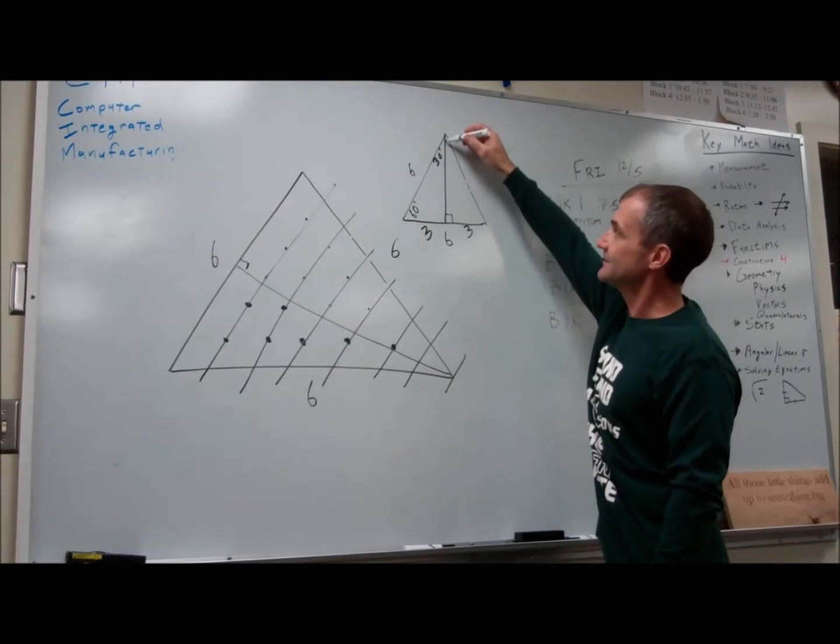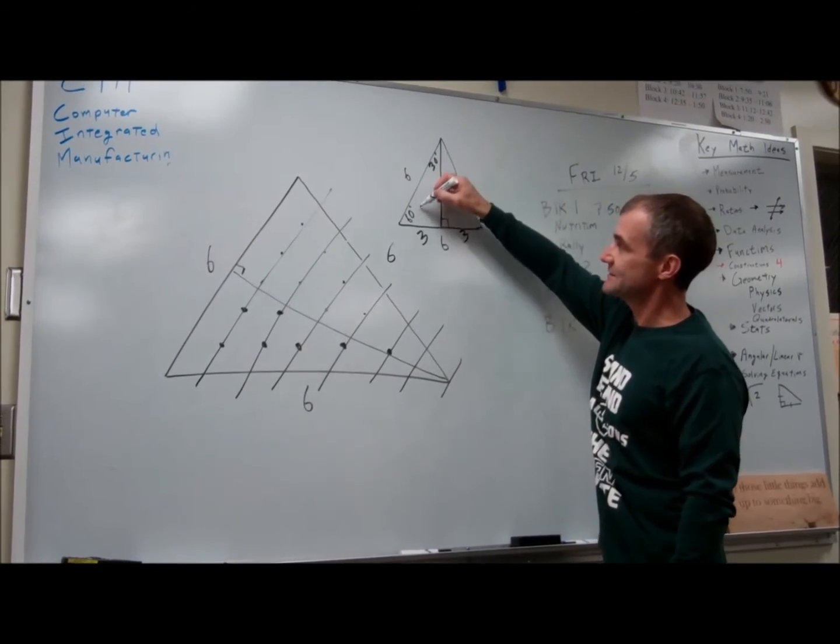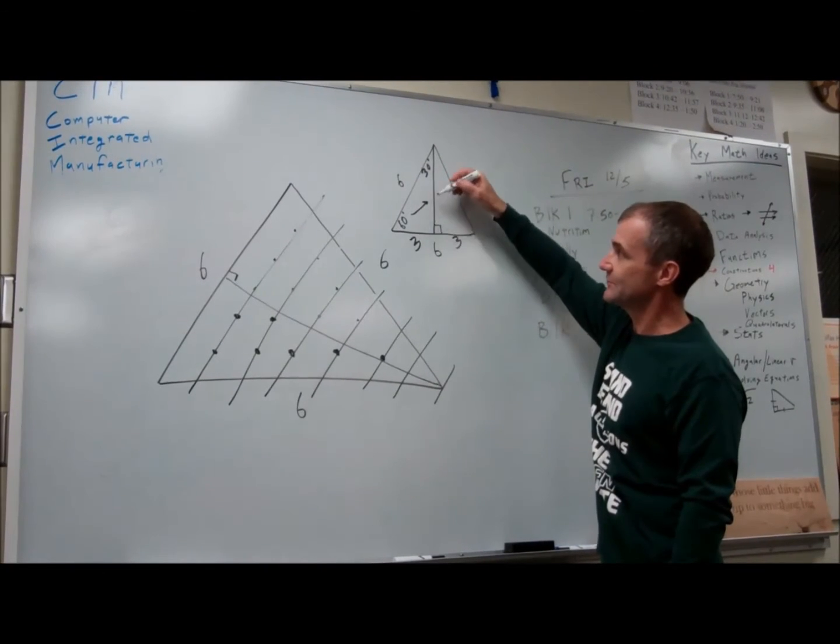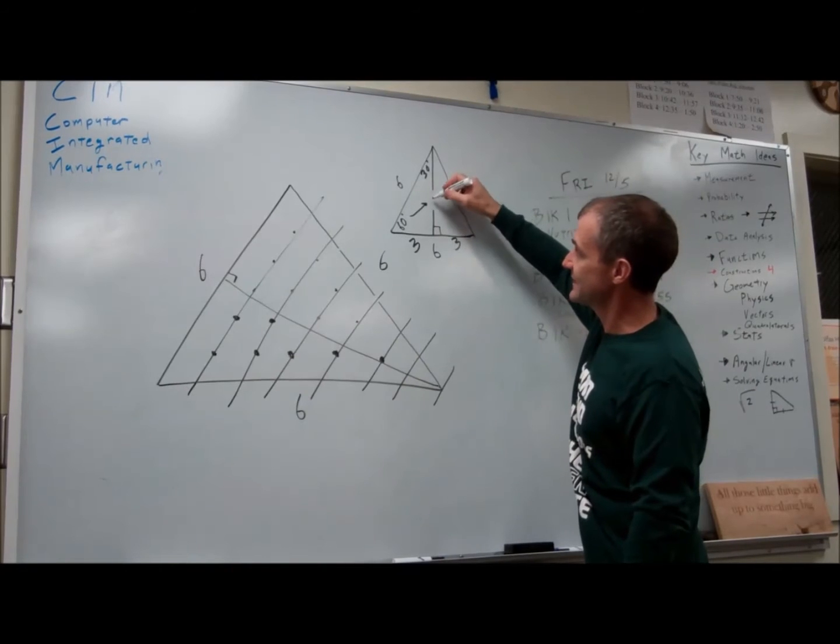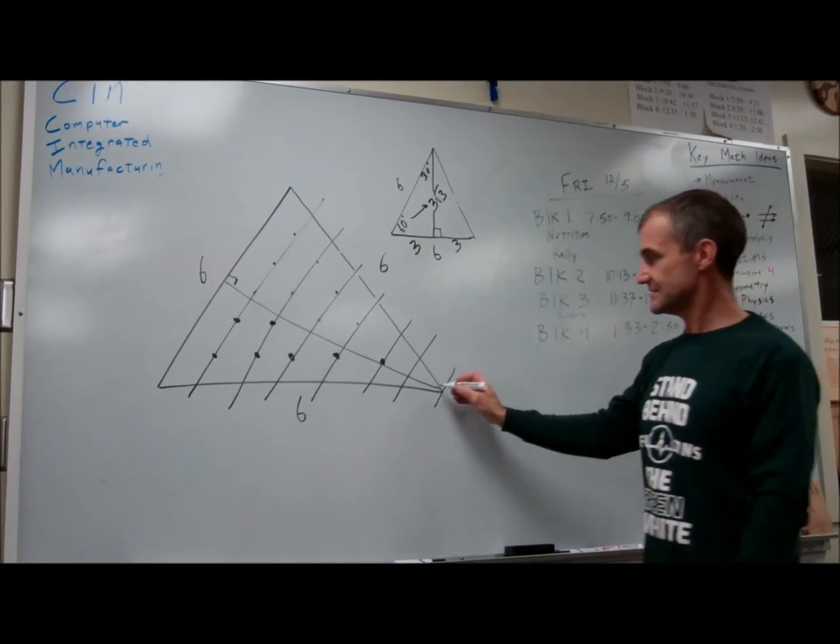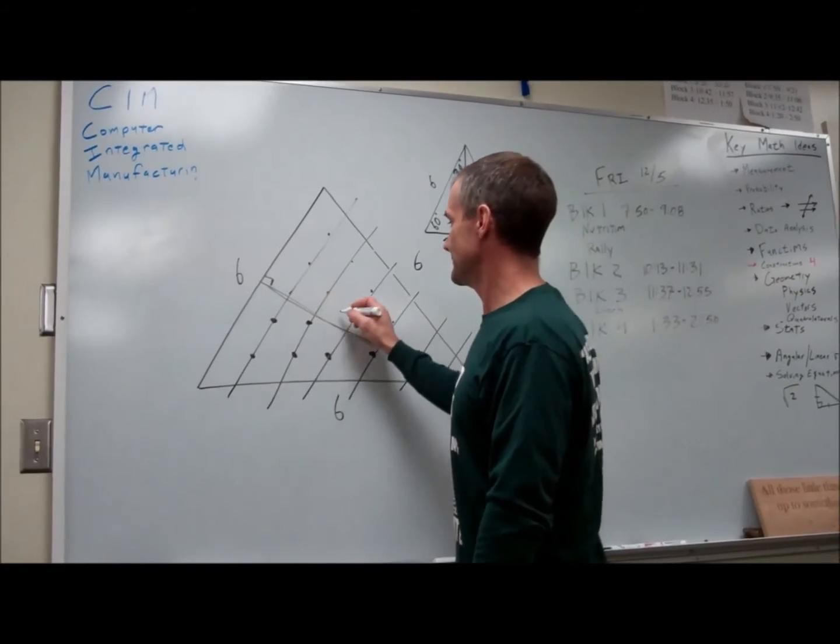And then the altitude or the leg opposite 60 degrees is the same as the leg opposite 30 times root 3. So this altitude is actually 3 root 3.